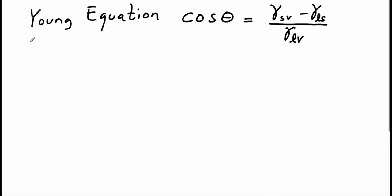You can see that if we have a surface energy for our solid vapor that is greater than for the liquid solid interface, then we're going to have a positive right-hand side, which means that since the cosine of theta is positive, it means that theta is going to be less than 90 degrees.